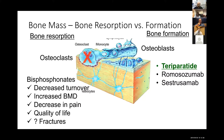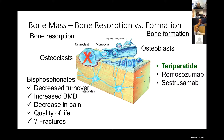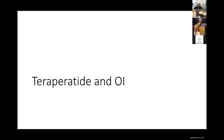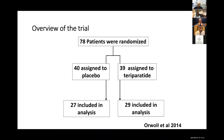There are agents — either approved or under investigation for osteogenesis imperfecta — that have their effect by modulating or increasing the activity of osteoblasts. These include teriparatide, romosozumab, and the investigational agent setrusumab. I'm going to briefly talk about teriparatide in OI.